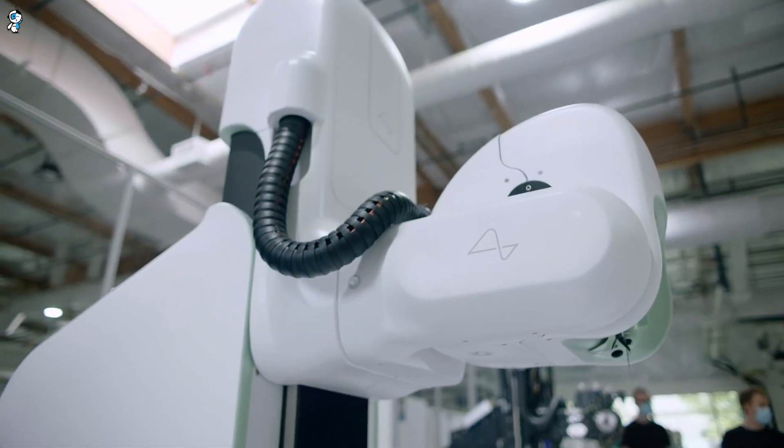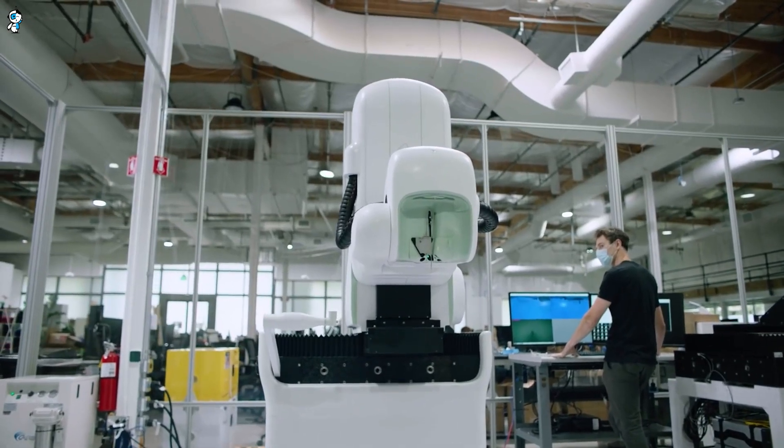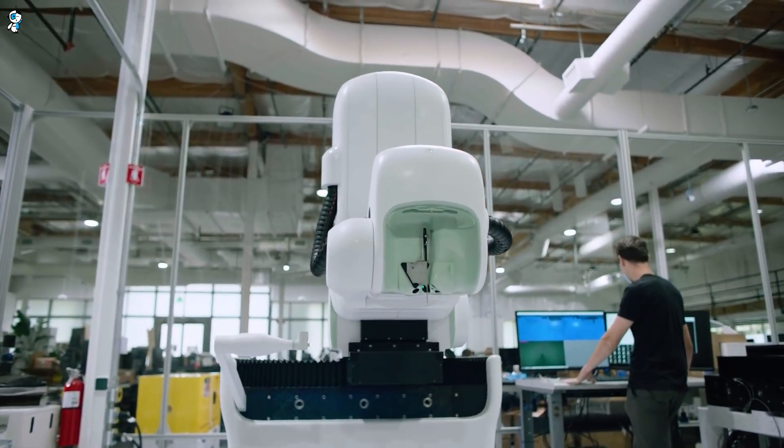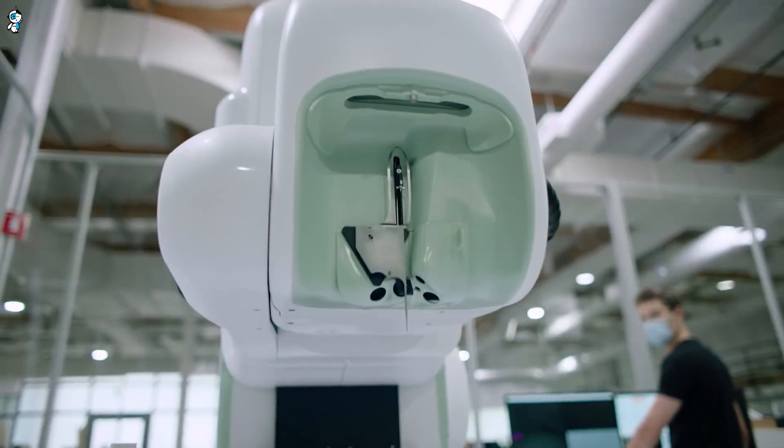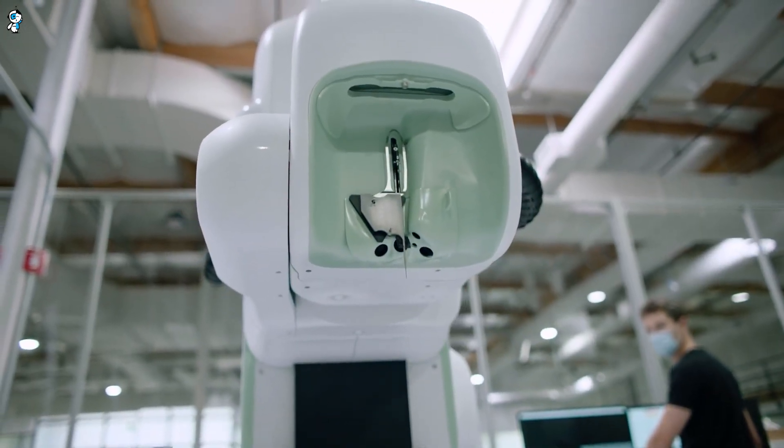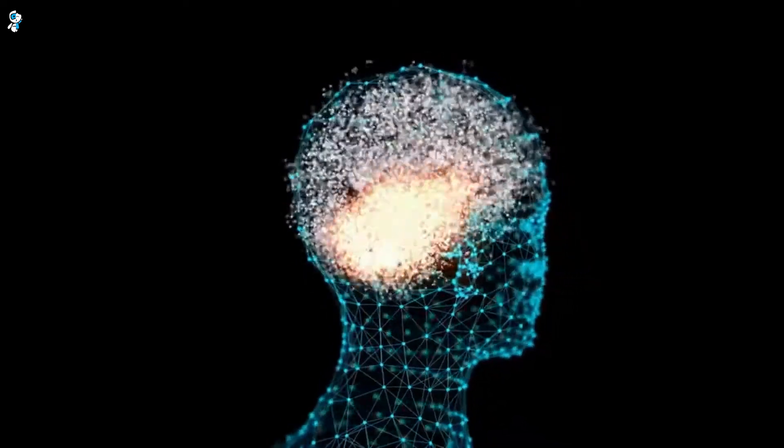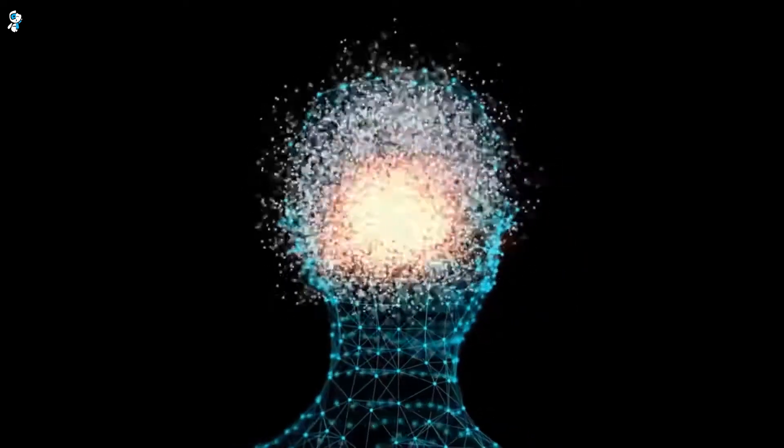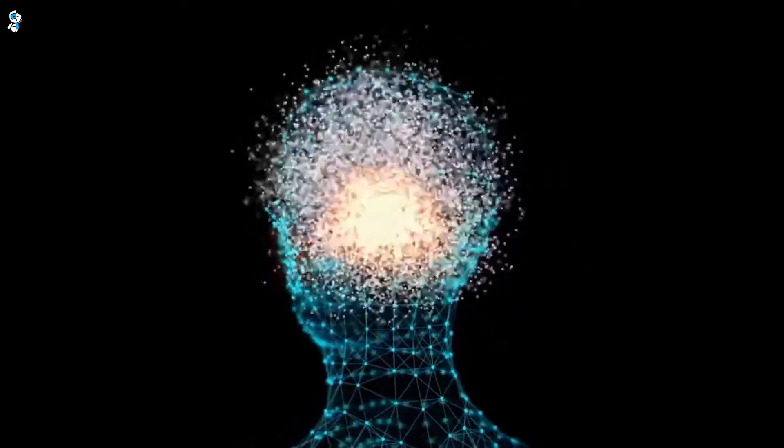Past brain implants relied on imprecise manual placement, leading to inconsistent results. The R1's precision targeting allows for repeatable implantation, setting the stage for more predictable outcomes. Neuralink's robotic implantation system opens the door to a new paradigm in brain-computer interfaces.